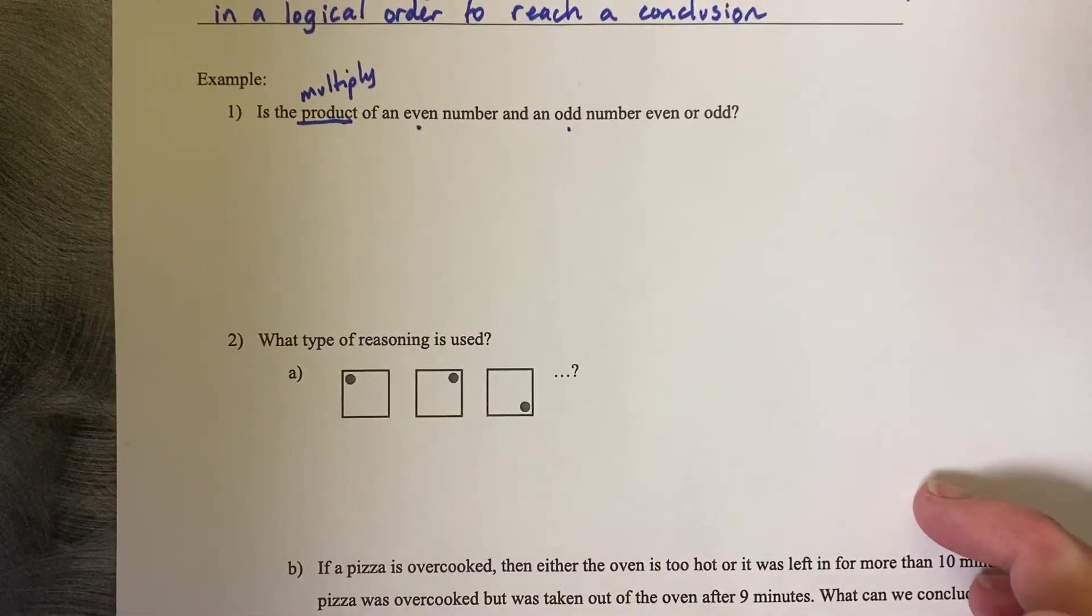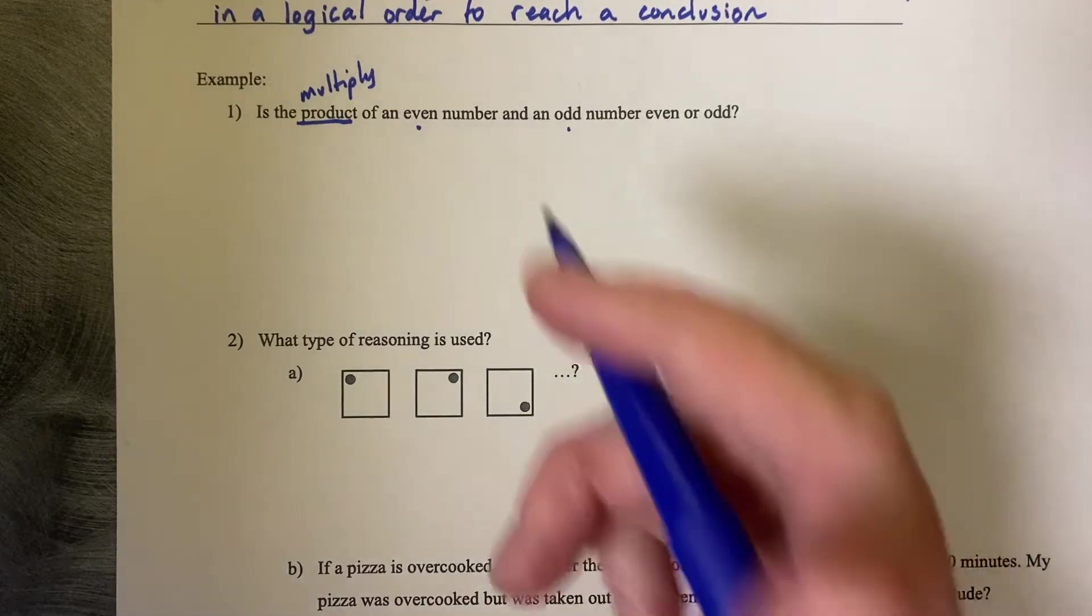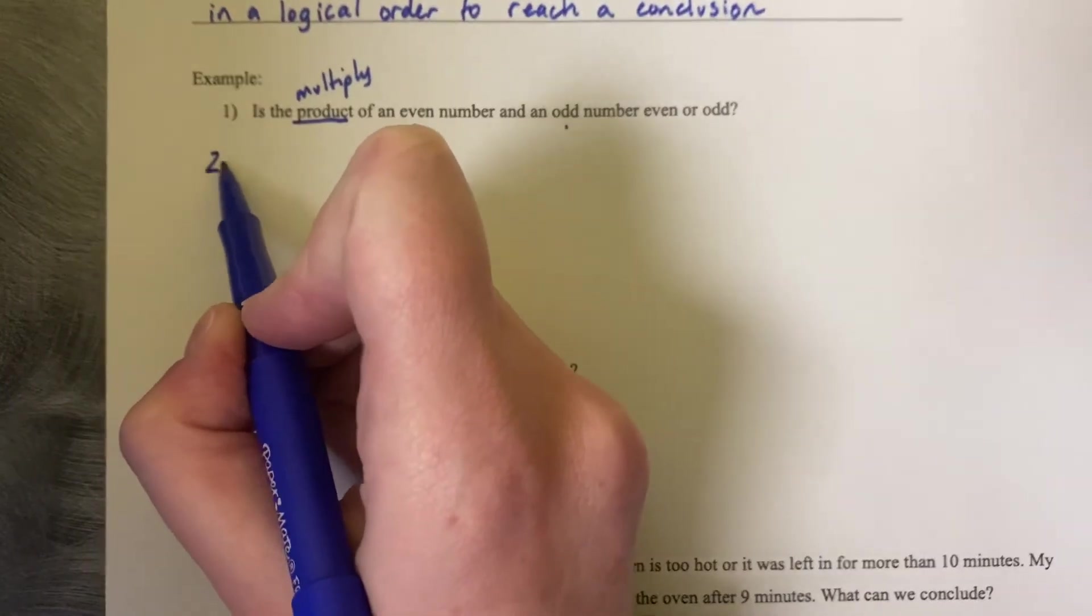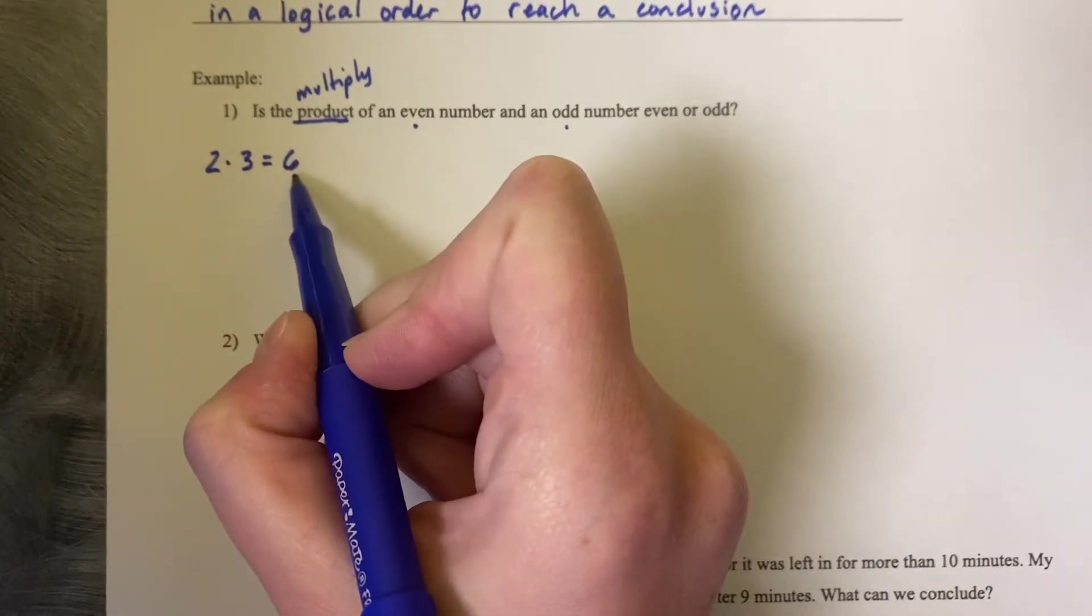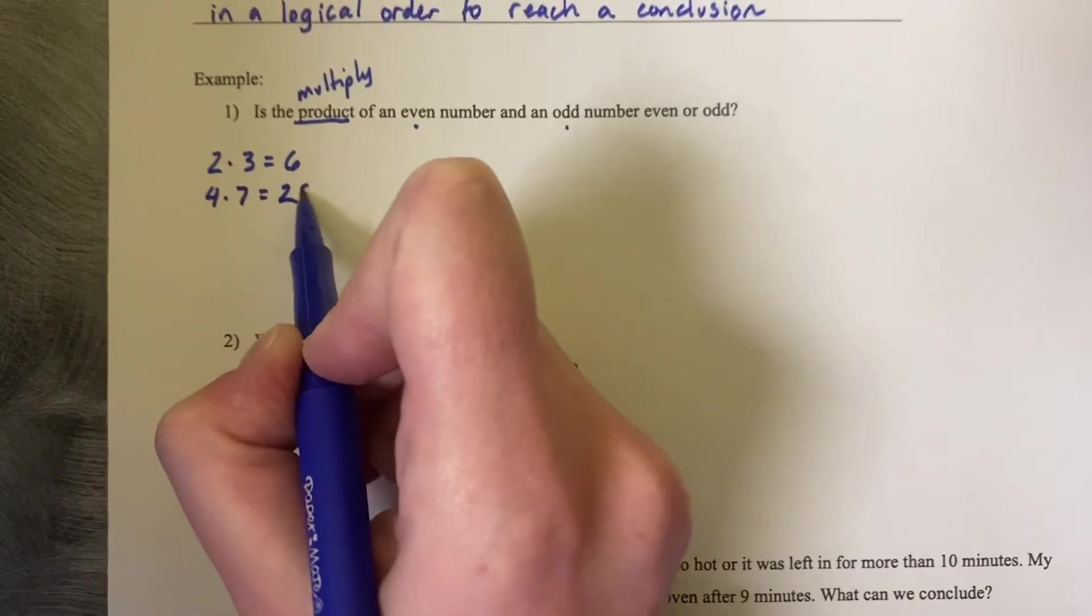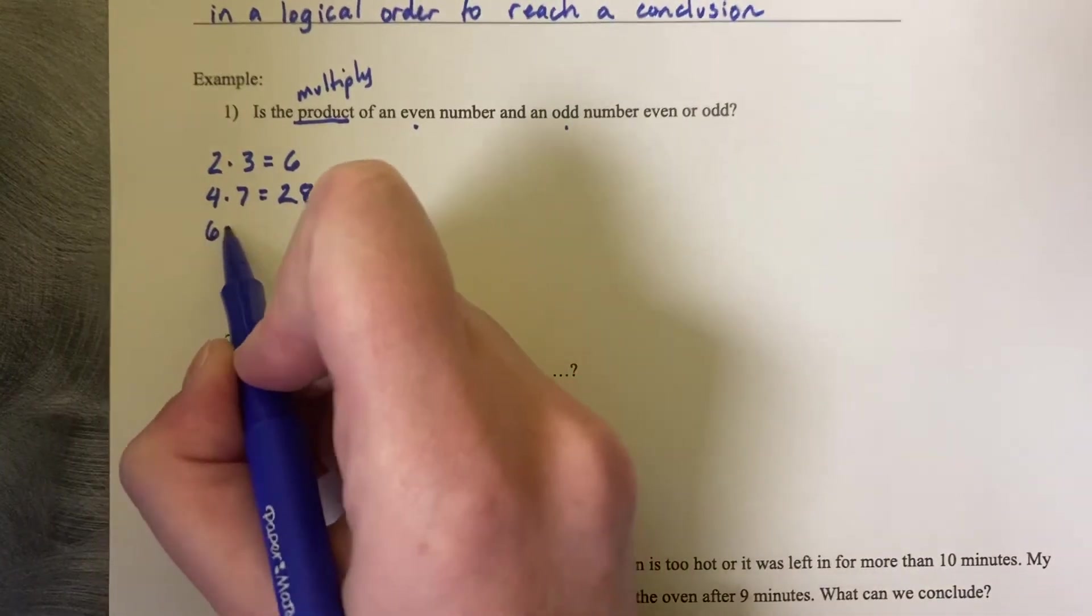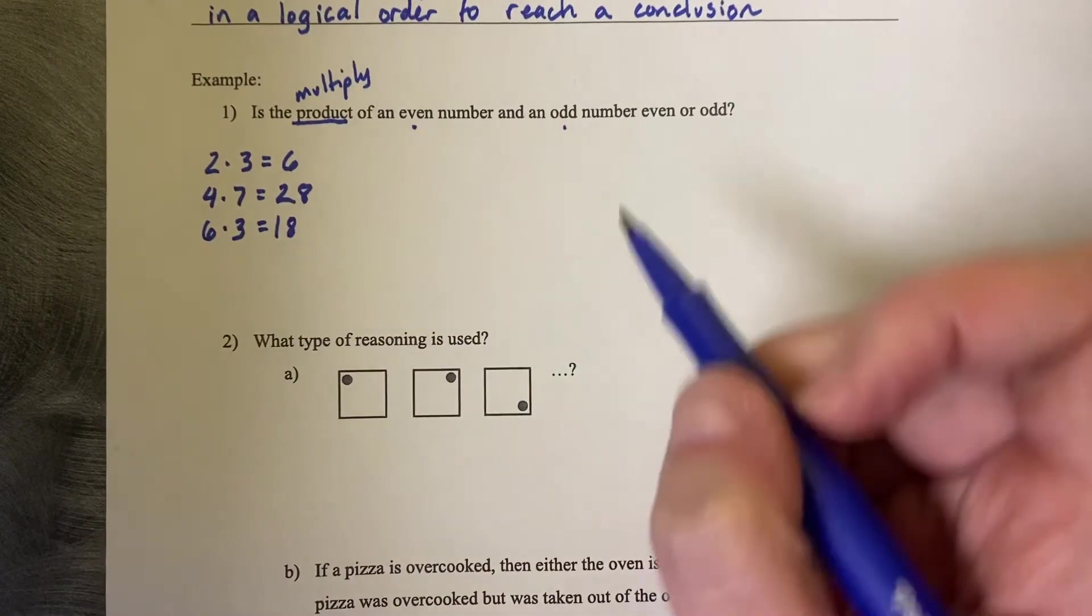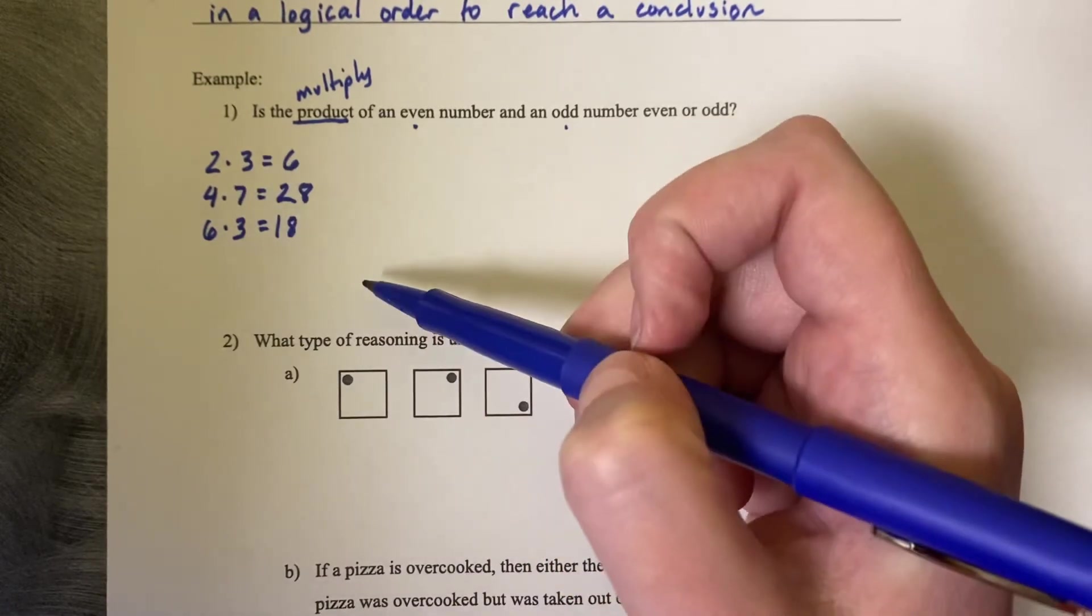Now what you could do is you could try and take a few guesses and see if things are true. So we could just pick any even and odd number, multiply them together. So 2 times 3 is 6. Even, odd, and even. Let's do another even and odd. Let's do 4 times 7, 28. Let's do a third example. If we do 6 times 3, 18, what does it seem like the pattern is doing? It seems like an even times an odd makes another even number.